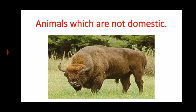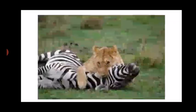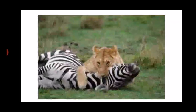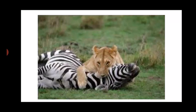What about wild animals which are not vegetarian? Look at this — it is a lion. What is it doing? It is eating a zebra. So you will see that the lion is not trying to eat grass. It is eating another animal. That is why we call the lion carnivorous. Carnivorous means non-vegetarian — it does not eat only fruits, leaves, or vegetables, but has to eat other animals.